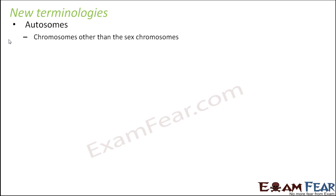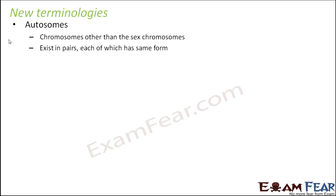Autosomes are the chromosomes other than the sex chromosomes. Humans have 44 autosomes in total. These chromosomes decide the characteristics of all the body cells — for example, hair color, eye color, shape of the eye, shape of the mouth, shape of different organs. All these traits are decided by the genes present on the autosomes. They exist in pairs, each pair having the same form, and they control somatic traits like eye color, hair color, skin color, ear shape, etc.